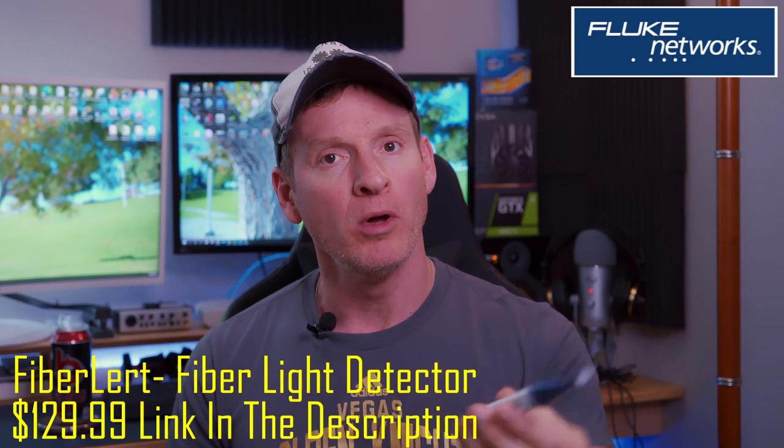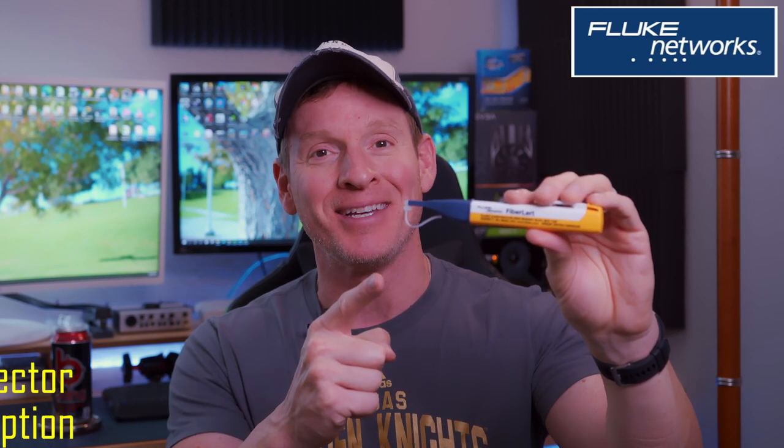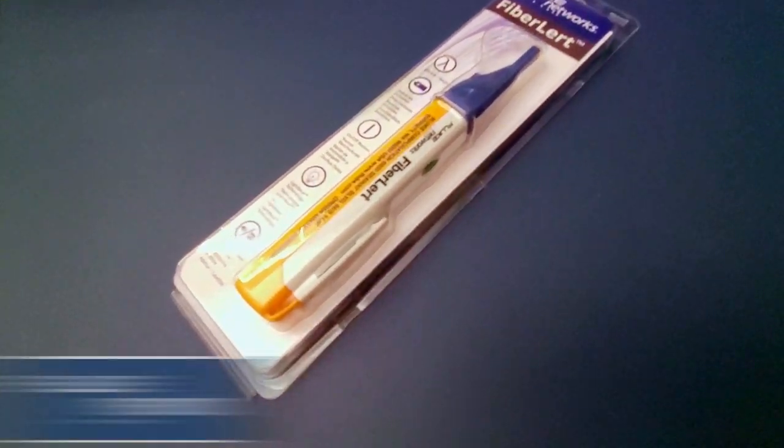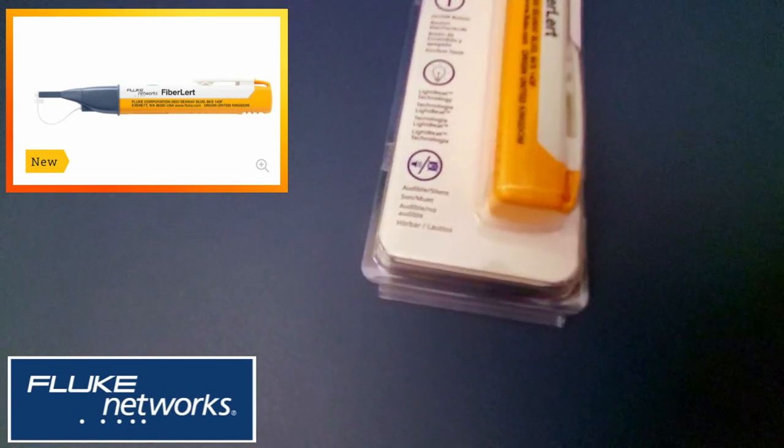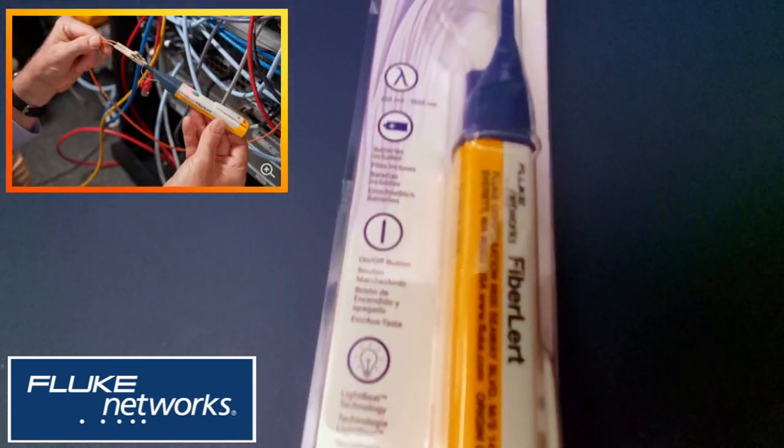This is the Fiber Alert Fiber Light Detector from Fluke Networks. It's small, portable, and runs on two AAA batteries. The Fiber Alert Fiber Light Detector can quickly check for fiber activity, polarity, and connectivity.